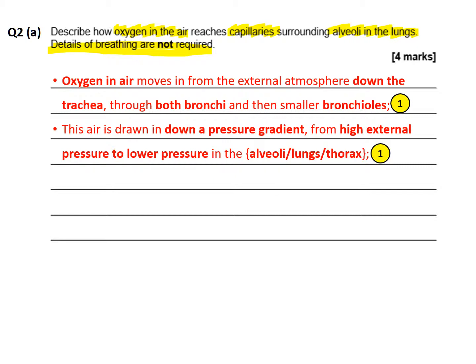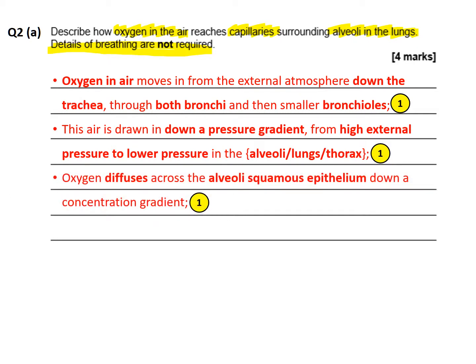Oxygen gas is drawn from higher pressure to lower pressure down a pressure gradient, so it's important to mention this. There is high external pressure in the outside atmosphere, and the ventilation mechanism helps to establish a lower pressure inside the chest cavity — the thorax — inside the alveoli.